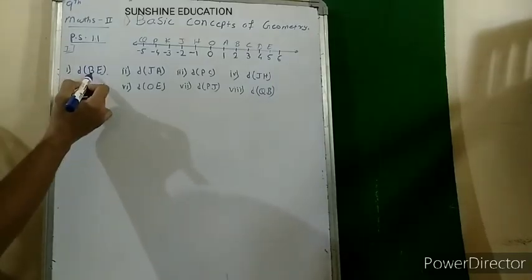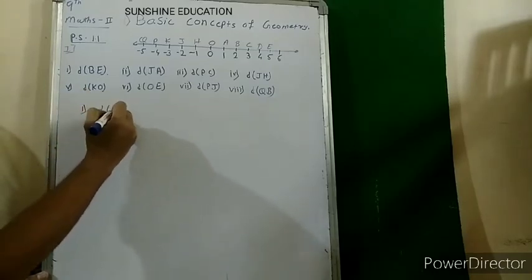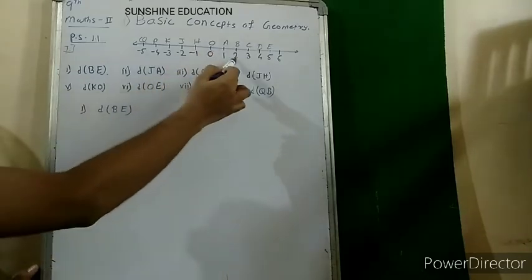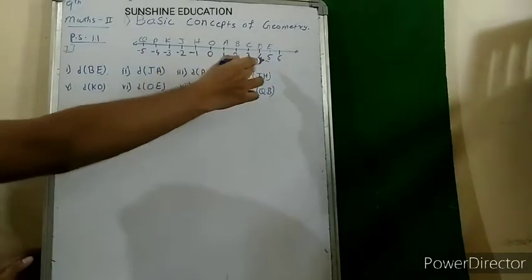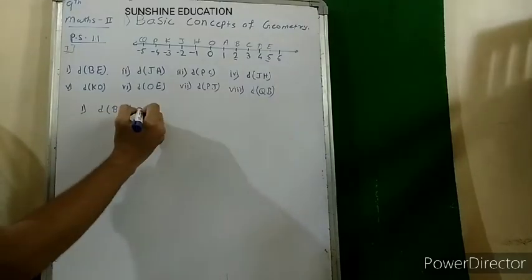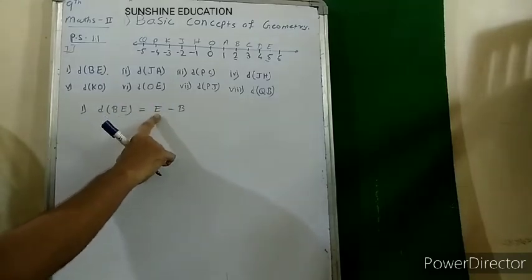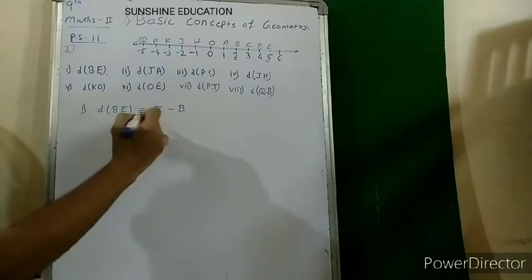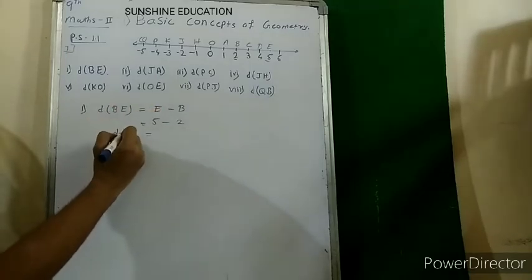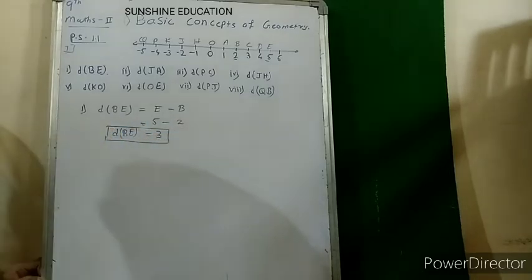The first question: find distance BE. Between B and E, E is greater, so we subtract greater minus smaller: E minus B. The coordinate of E is 5 and the coordinate of B is 2. So the distance BE = 5 minus 2 = 3 units.